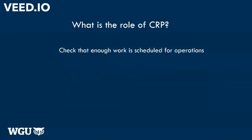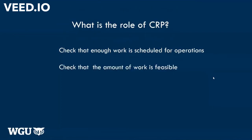What is the role of CRP in the organization? Number one: it is to check that enough work is scheduled for operations — enough workers, enough labor and machine has been scheduled for the operation. Whatever is going to be done, we've already arranged the materials; now there is a need to have the workers or the labor and machine to complete the work. Secondly, it is to check that the amount of work is feasible — that whatever needs to be done is well defined and designed to be done.